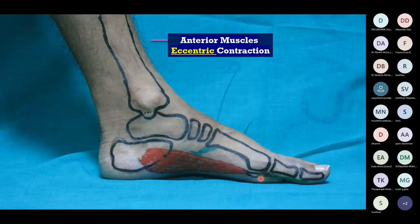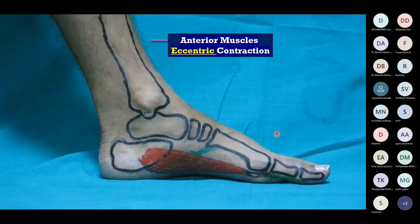During the heel rocker, the anterior muscles eccentrically contract so the forefoot does not slap onto the ground. If the anterior group is paralyzed — for example, due to common peroneal palsy causing foot drop — the patient will have a high-stepping gait and a foot slap because there is no controlled plantar flexion.